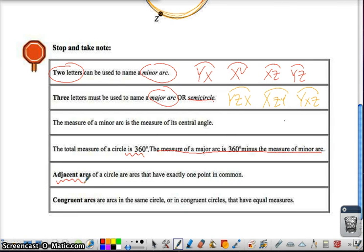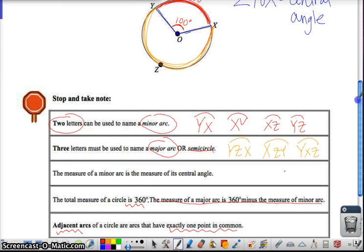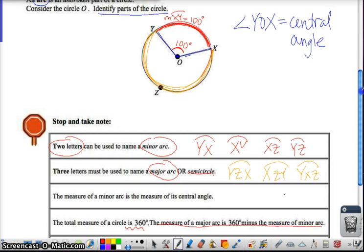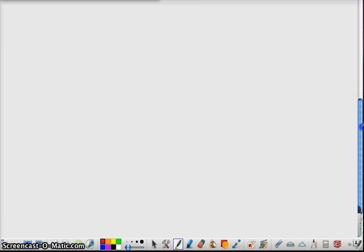Adjacent arcs, arcs that are side by side, and if they're side by side, they must share exactly one point. So what are some examples of adjacent arcs up here? Well, we could say arc YX and arc XZ are adjacent arcs. Why? Because they both share point X. We could also say XZ and ZY. So there's a variety, or we could say ZY and YX. Those are all adjacent arcs.